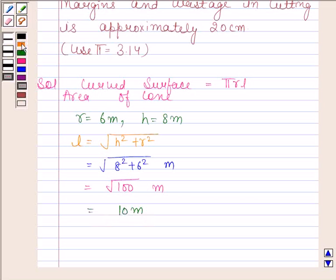Now substitute the value of pi, r, and l. Pi equals 3.14, r equals 6 meters, and l equals 10 meters. So this equals 188.4 meters squared.